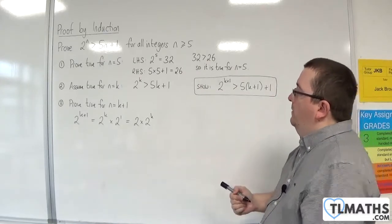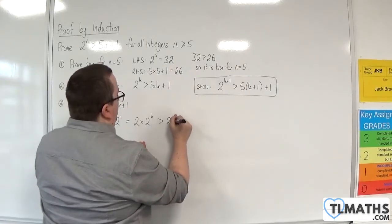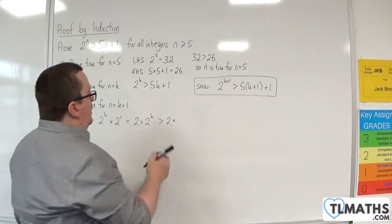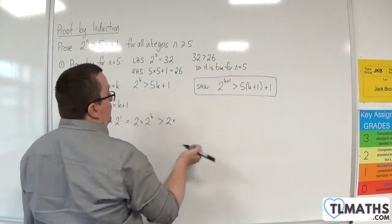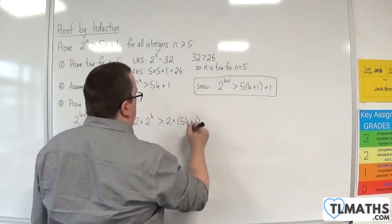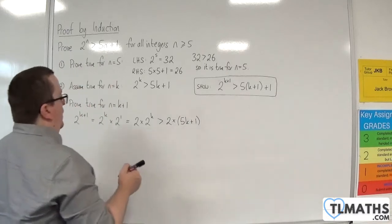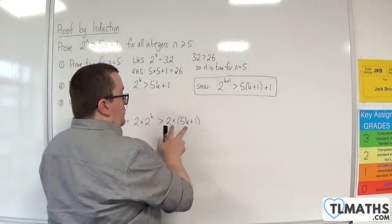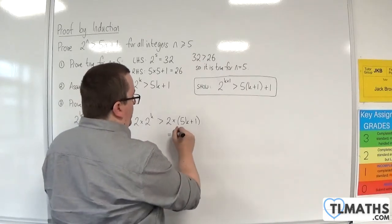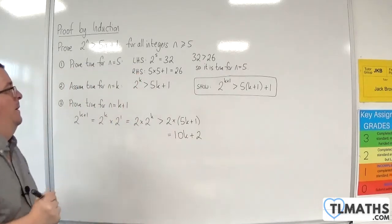Now, I know then that that has to be greater than 2 lots of, and the 2 to the k was greater than 5k plus 1. So, 2 times 2 to the k has got to be greater than 2 times 5k plus 1. So, 2 times 5k plus 1 is equal to 10k plus 2.